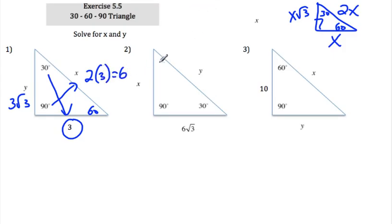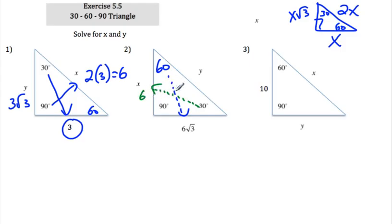In this example, they gave us the side opposite to 60, which is 6 radical 3. So opposite to 30 must have been just 6, and opposite to 90 is always twice whatever is opposite to 30 — so that's 12, which is 2 times 6.